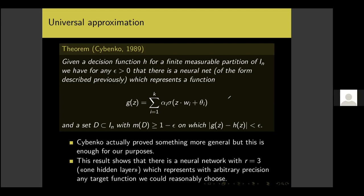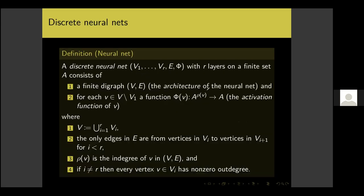A question from Gail: have we fixed the architecture? Saying 'there is a neural net' means there is a neural net with some architecture, and that architecture will depend on the function we want to represent. But in all cases, we're able to do it with only three layers.